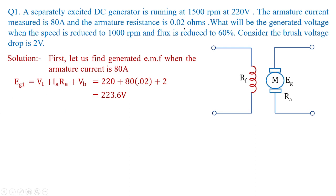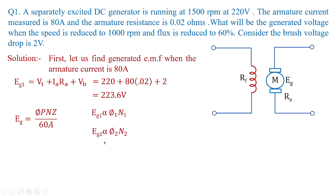We label this as Eg1 because they are asking us to calculate the generated voltage at reduced speed. We need to know the actual generated voltage first. From the standard equation of generated voltage in a DC machine — given by (P·φ·N·Z) / (60·A) — we know that Eg is proportional to flux times speed. So Eg1 is proportional to φ1·N1, and Eg2 is proportional to φ2·N2. Since flux is reduced to 60%, φ2/φ1 = 0.6.